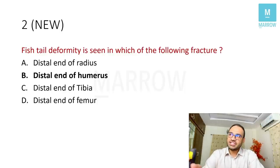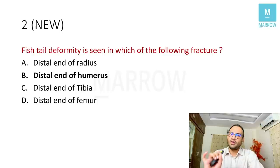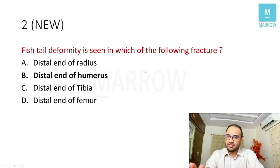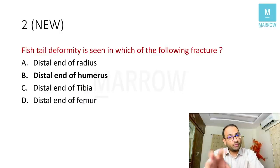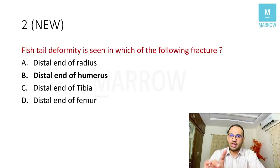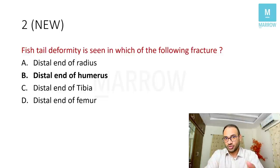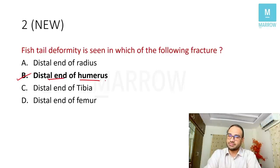Coming to the next question: fish tail deformity is seen in which of the following fractures? This was a brand new question — never asked before at your level for postgraduate entrance exams, although asked in MS and DNB exams. The answer here is the distal end of humerus.